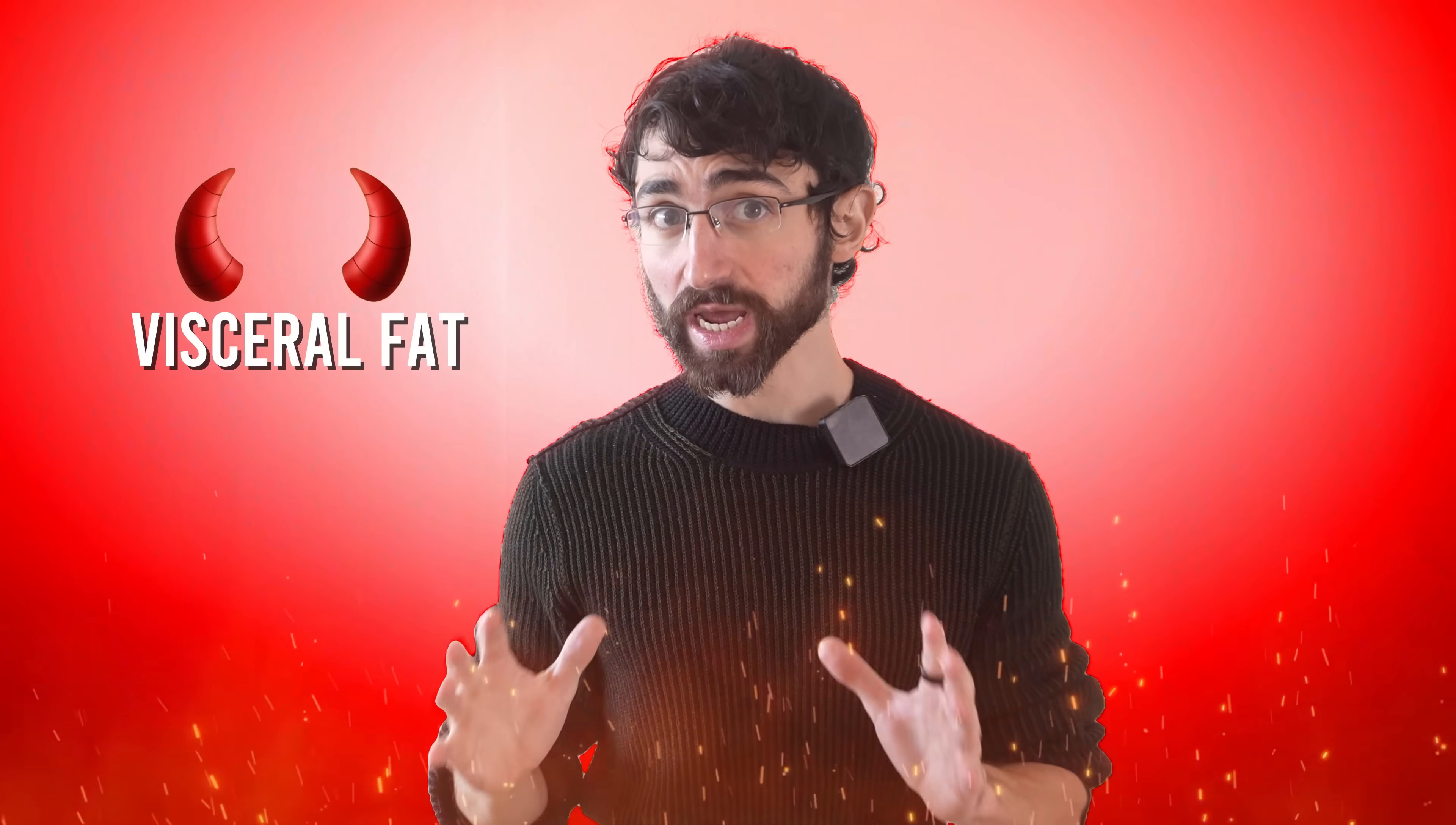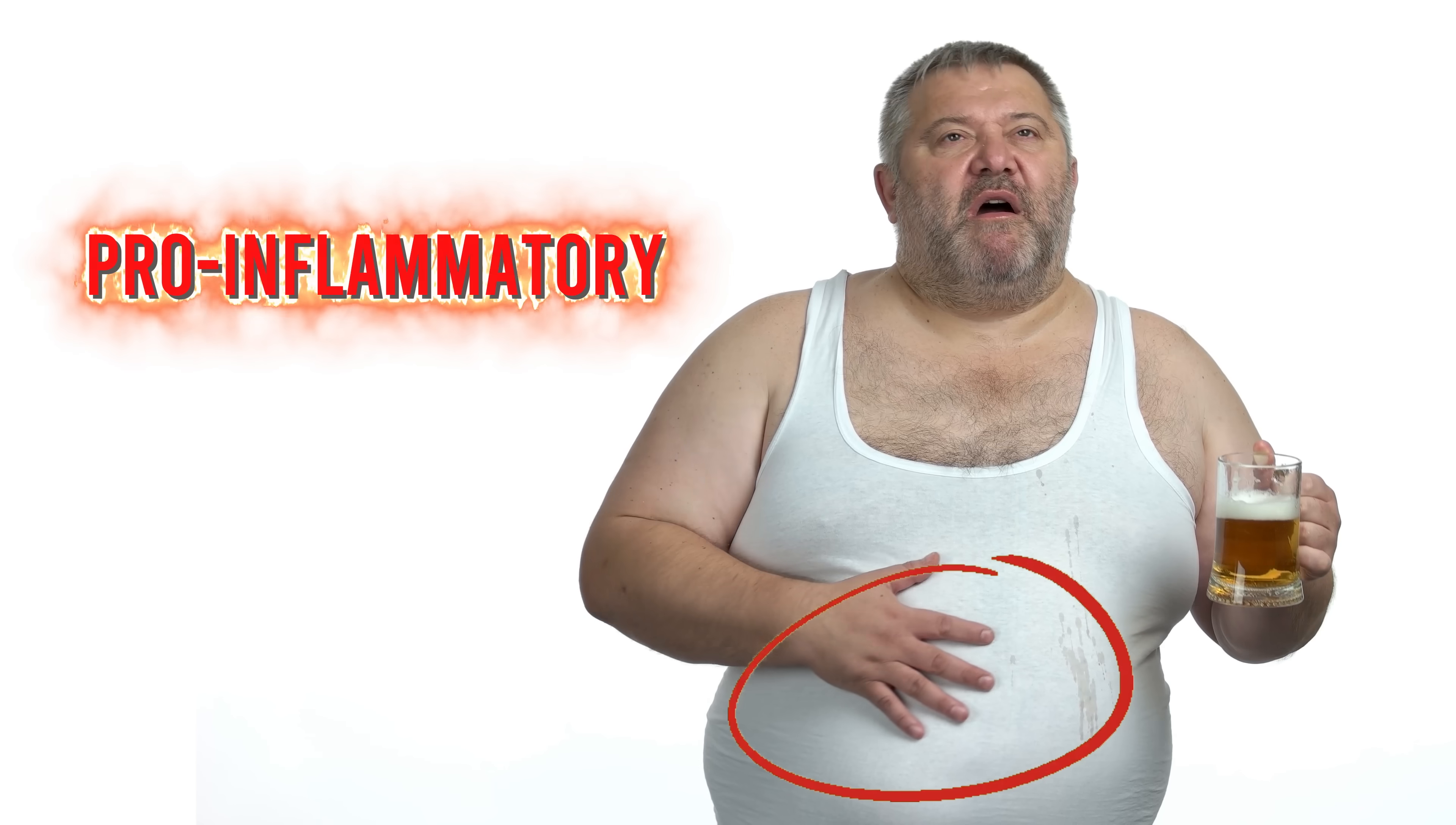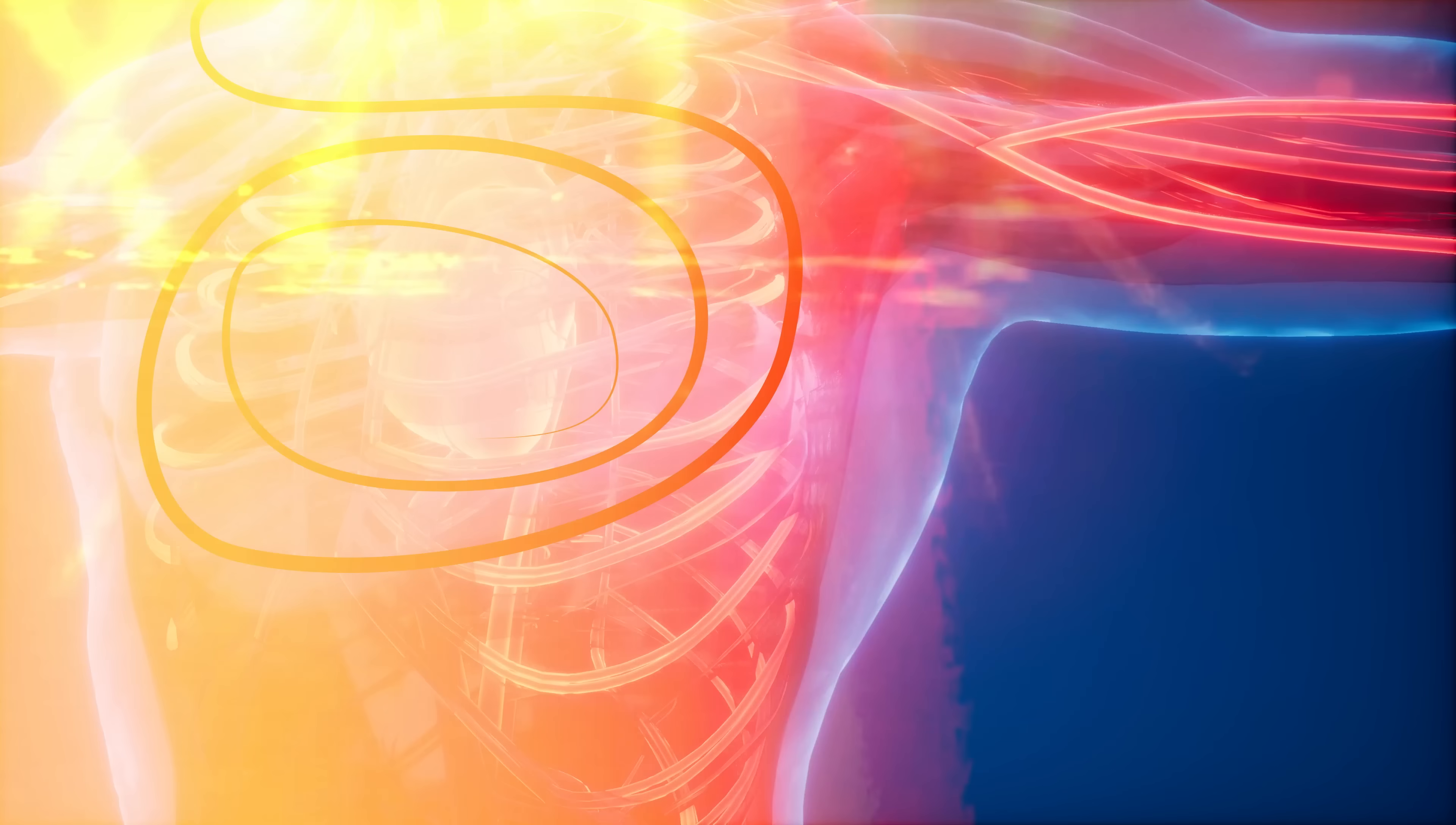Visceral fat is the worst type of fat. It's the fat that sits around your internal organs. Beyond just contributing to a beer gut, it's particularly pro-inflammatory and strongly linked to poor metabolic health and poor cardiovascular health. If there's a type of body fat that you want to minimize, it's visceral fat.